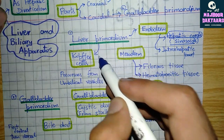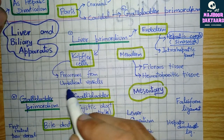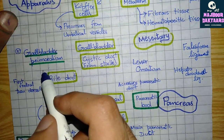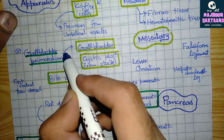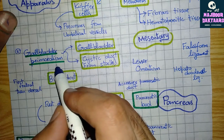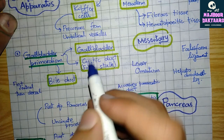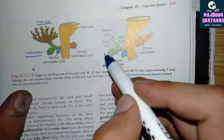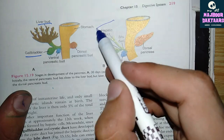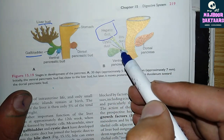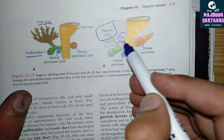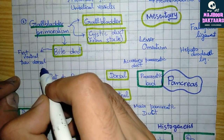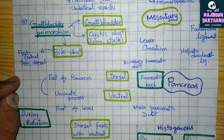The fibrous and hematopoietic tissues of the liver are formed from the surrounding mesoderm of the liver primordium. The caudal cells of the liver primordium are formed from precursor cells which move from the umbilical vesicle. The gallbladder primordium gives rise to the gallbladder and cystic duct from the stalk, as well as the bile duct connecting the hepatic duct and cystic duct to the duodenum. The bile duct opens first ventral to the duodenum, then dorsal to the duodenum after rotation.